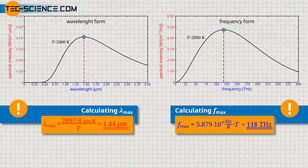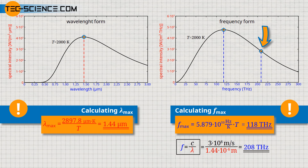One could think that f_max can be calculated directly from lambda_max using the relationship between frequency, wavelength and speed of light. However, if you use this formula, you get a frequency of 208 terahertz. This calculated frequency obviously does not correspond to the frequency f_max. The relationship between frequency, wavelength and speed of propagation therefore does not apply to lambda_max and f_max. Why is this so?